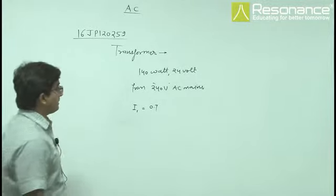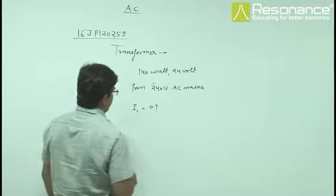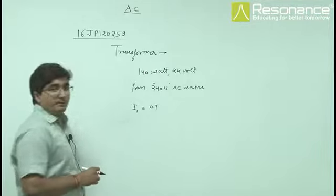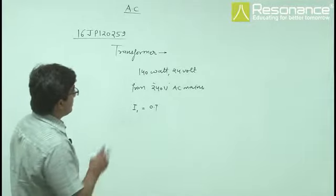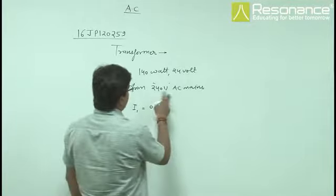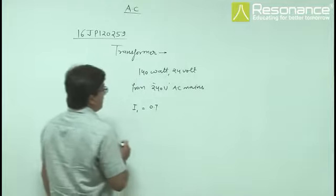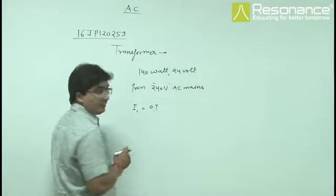This is the question of transformer. Efficiency of transformer is asked. 140 watt and 24 volt from 240 volt AC mains. It means it is a step down transformer.